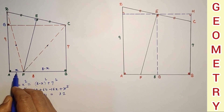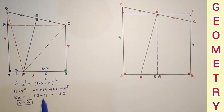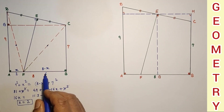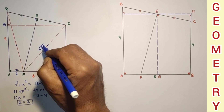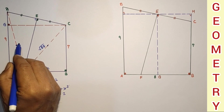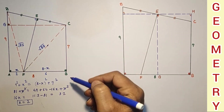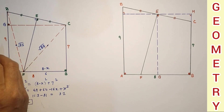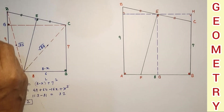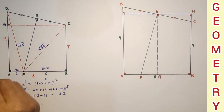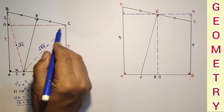So AF = 2 and FB = 6. Then FC² = 6² + 7² = 36 + 49 = 85, so FC = √85, and DF = √85 as well. Since CB = 7, the rectangle construction gives AG = 7, and GD = 9 − 7 = 2. Also GC = AB = 8.